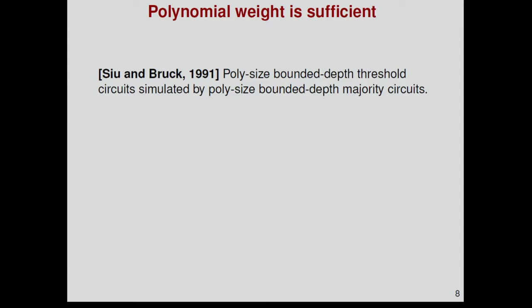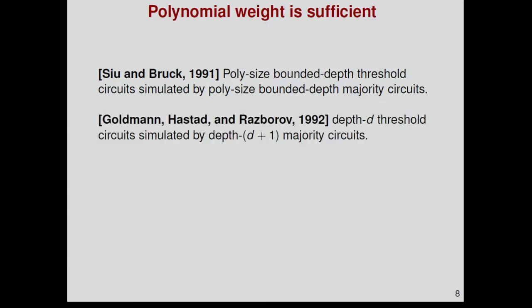Results from the 90s show that if we start with these threshold gates and they have bounded depth and a polynomial number of gates, then we can simulate them with bounded depth majority circuits of polynomial size. In other words, we can reduce the exponential weights to polynomial weights, and the depth blows up by some constant. Subsequent work has shown that we can start with depth D threshold circuits and get depth D plus one majority circuits.